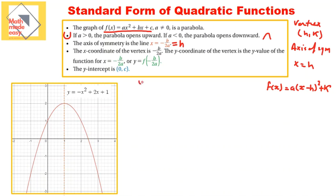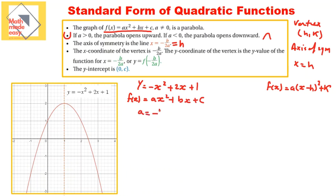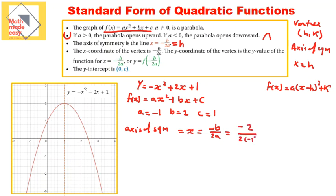Now let's apply what we have to this problem. I have the function y equals negative x squared plus 2x plus 1, and I already have the graph for it. Comparing to the standard form ax squared plus bx plus c, that makes a equal to negative 1, b equals 2, and c equals 1. To find the axis of symmetry: x equals negative b over 2a, which is negative 2 over 2 times negative 1, which is negative 2 over negative 2, equal to 1. So the axis of symmetry should be at the line x equal 1 — and looking at the graph, this is indeed the line x equal 1.